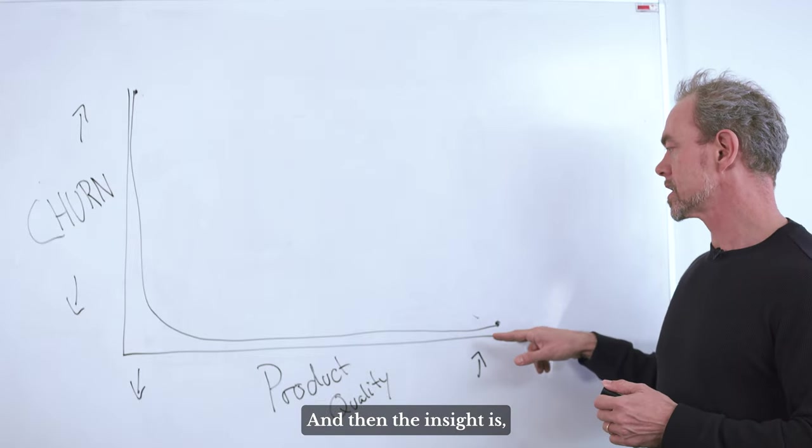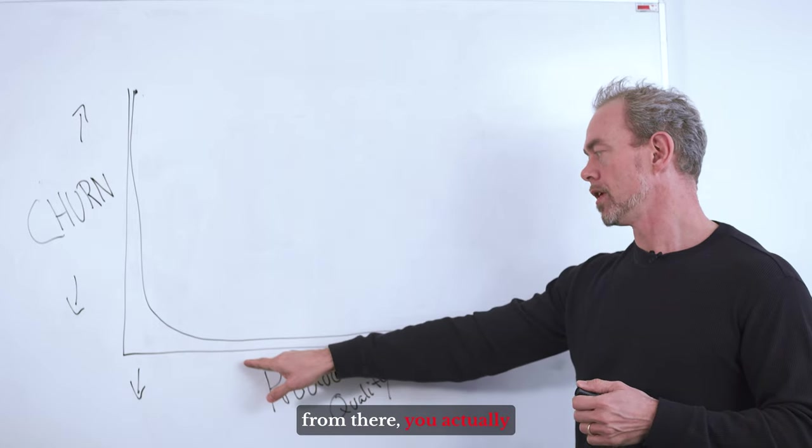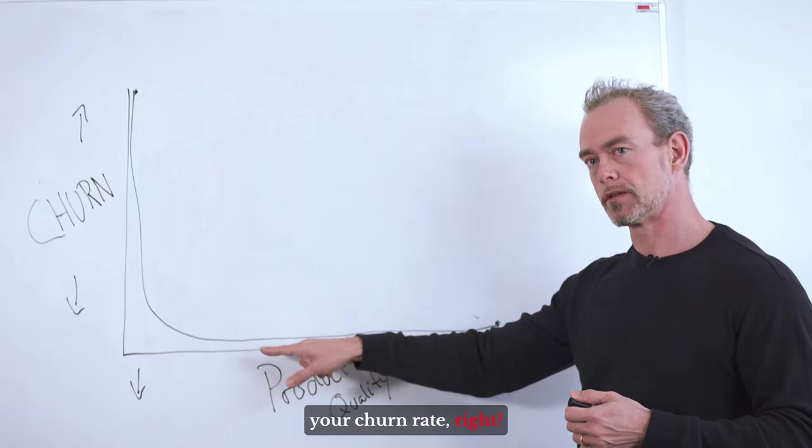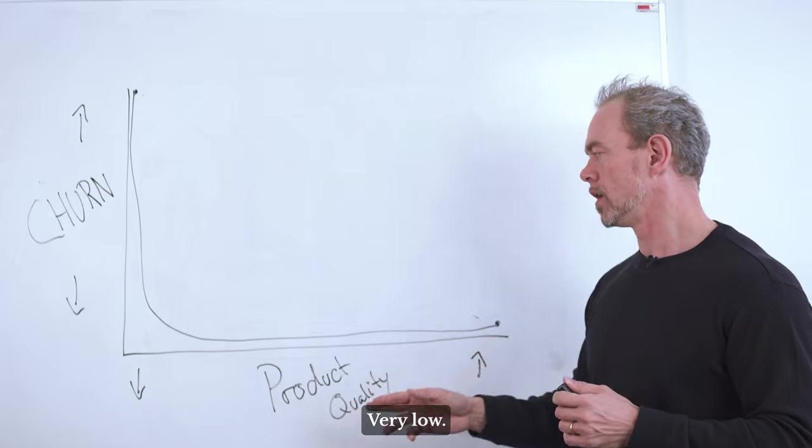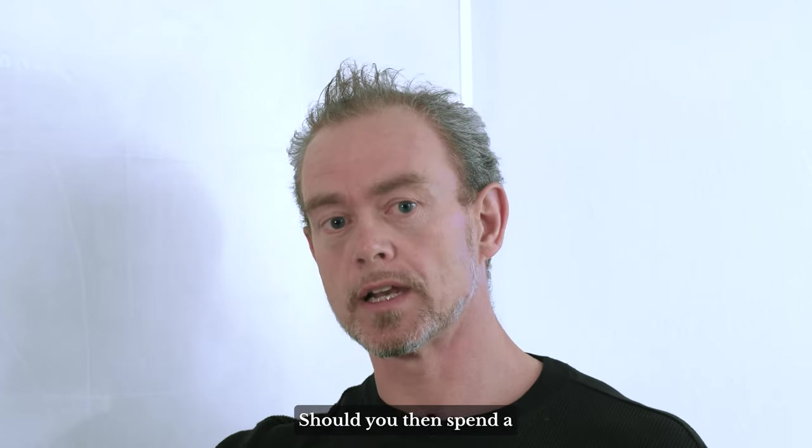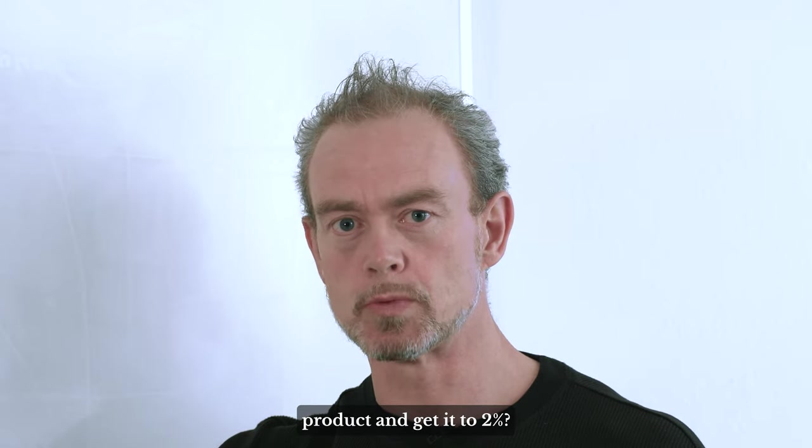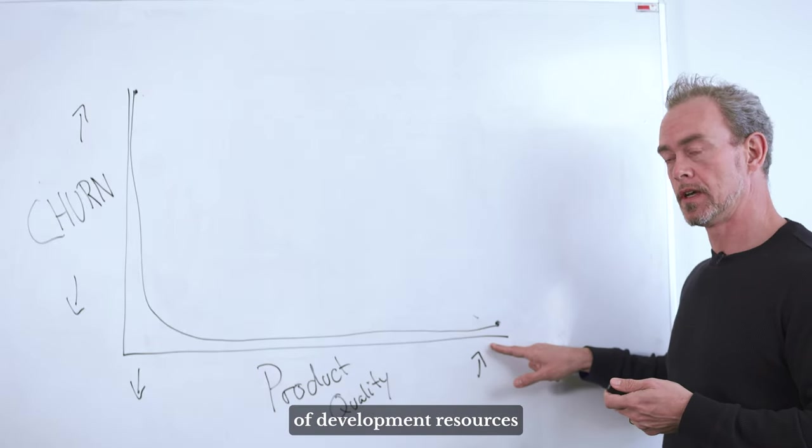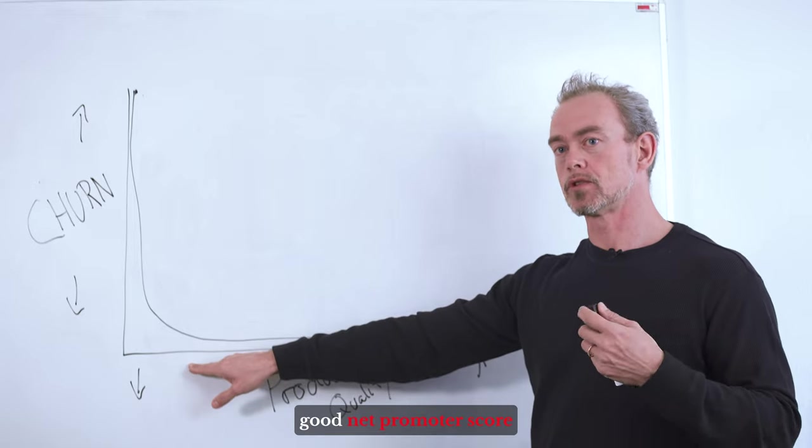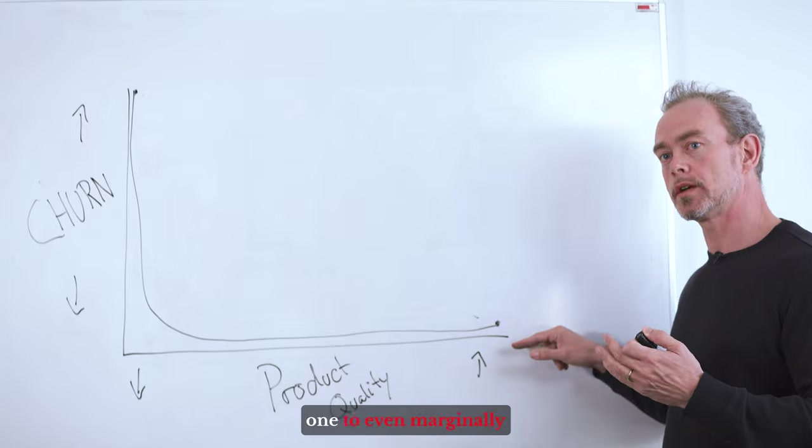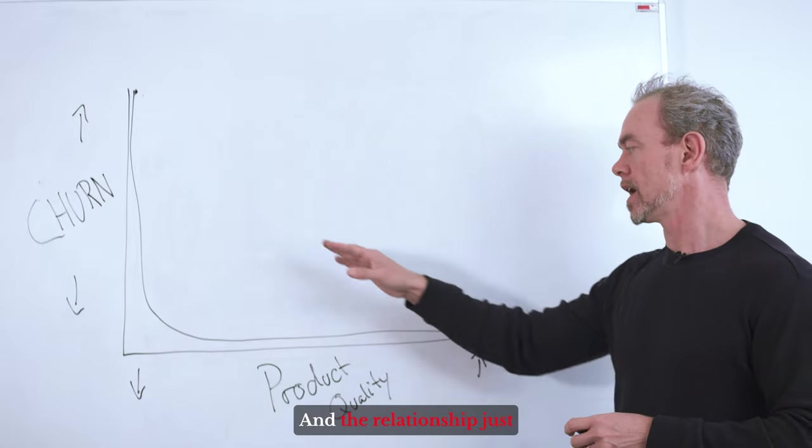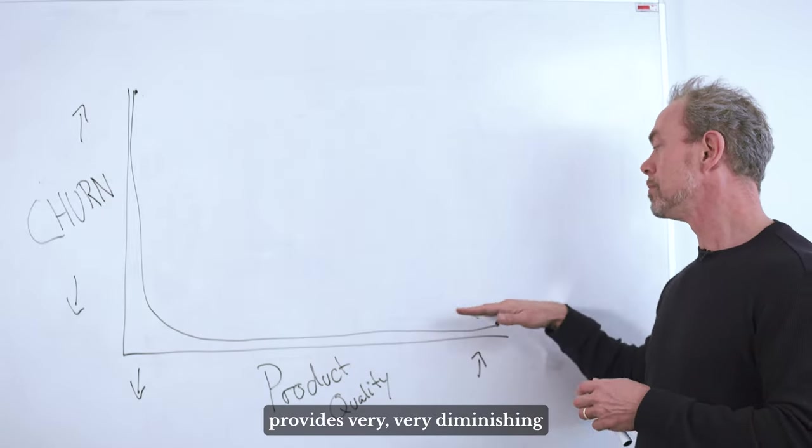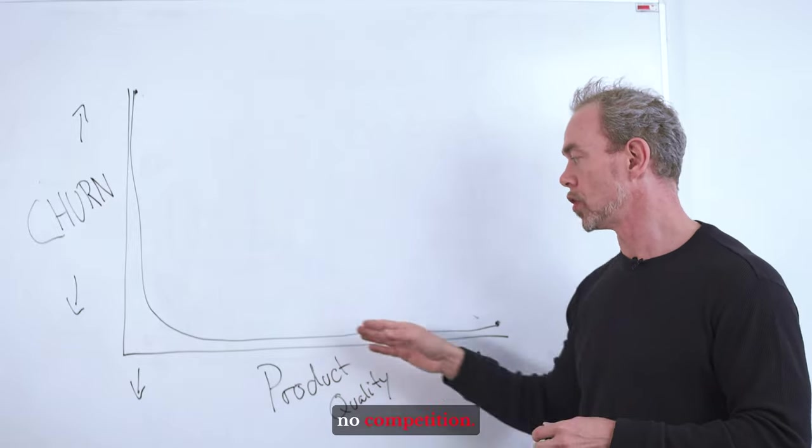And then the insight is, even though you might want to improve the product from there, you actually don't materially affect your churn rate. So let's say that you have a 3% churn rate in your product annually, very low. Should you then spend a lot of development resources to create an even better product and get it to 2%? Well the insight is that you have to spend a lot of development resources to really go from a good net promoter score to an absolute world class one to even marginally affect your churn rate, because it's already as low as it can go and the relationship just provides very diminishing returns on the product dimension if you have no competition.